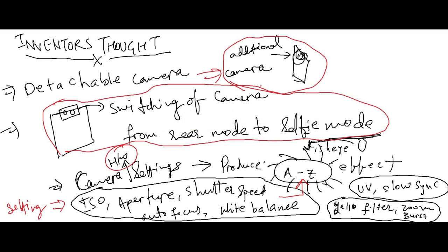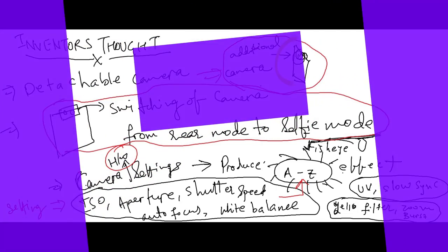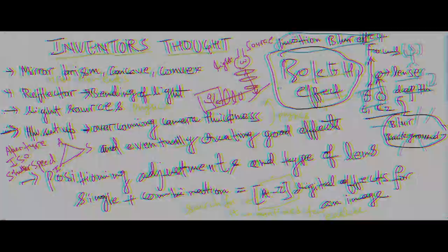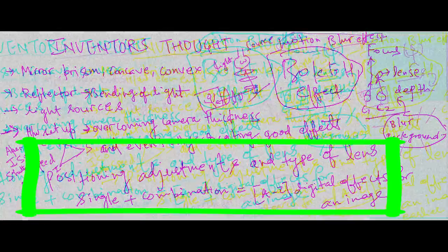Detachable lens to improve existing camera power as DSLR-like capabilities and switching from rear to front camera for saving cost of two cameras could be thought of as innovative ideas. Positioning adjustment and type of lenses produces single and combinational digital effects for the image.